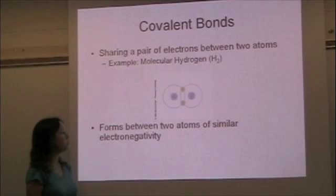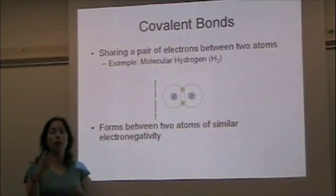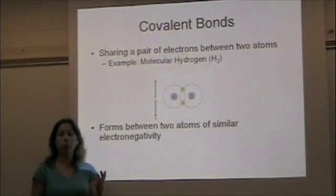Covalent bonds typically form between atoms that have similar electronegativities. So they're going to have an equal pull on the electrons, which is why they spend time around both atoms.